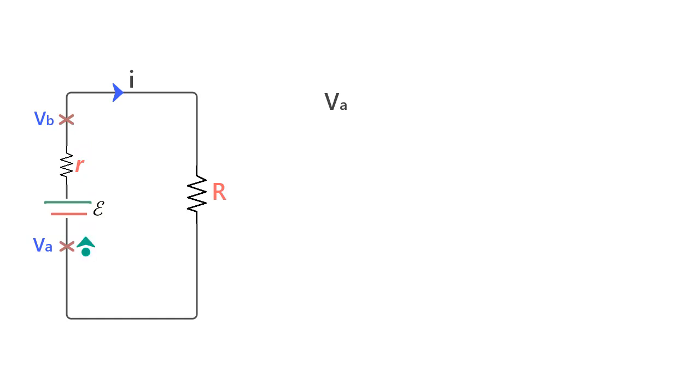So we first encounter the battery and we can see there is a gain in potential. So we add the value of EMF to VA. Then we pass through the internal resistance of the battery and since we are moving in the direction of the current, the potential should drop as we pass the resistor and move to the other side. So the drop in potential is IR and then we reach point B where the potential is VB.